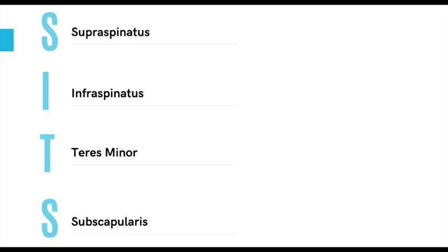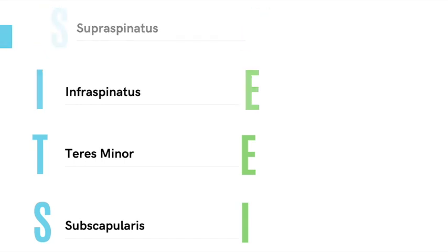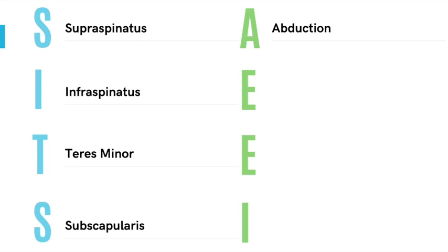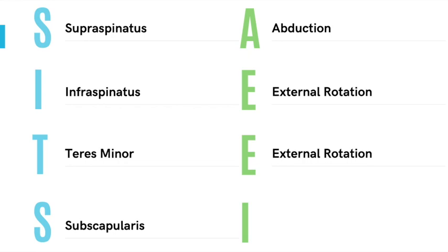Now that you know all four rotator cuff muscles, what's extremely high yield is to know their actions or functions. You can remember this with the letters A-E-E-I. These letters correspond to the rotator cuff muscles next to them. For supraspinatus, its function is abduction. For infraspinatus, that muscle's action is external rotation or lateral rotation. For subscapularis, its function is internal rotation or medial rotation.